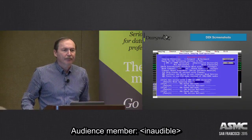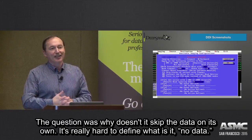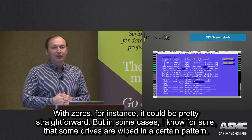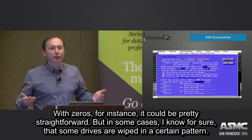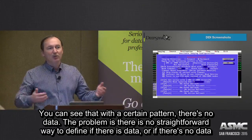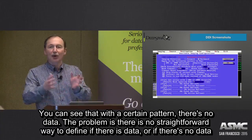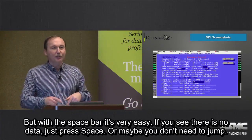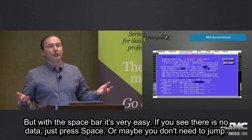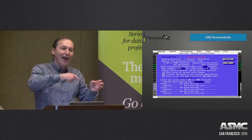Question: why doesn't it just skip over no-data areas on its own? It's really hard to define what 'no data' means. Zeros could be a straightforward case, but some drives are wiped with a certain pattern — you can recognize that pattern as no data too. There's no straightforward way to define whether there is data or no data. But with the spacebar it's very easy — if you see it looks like no data, you press spacebar. Or maybe you don't need to jump at all if the drive is in good shape — you can just run it to the end of the drive.